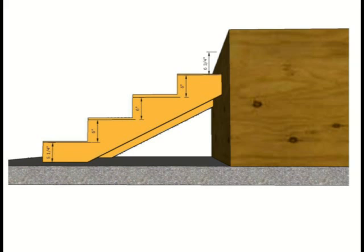If we have a six inch overall total rise, we need to subtract our tread thickness which is three quarters of an inch from the bottom. So our first step is going to be five and a quarter inches. Measure from the ground to the top of the stringer - this measurement is going to be five and a quarter inches.